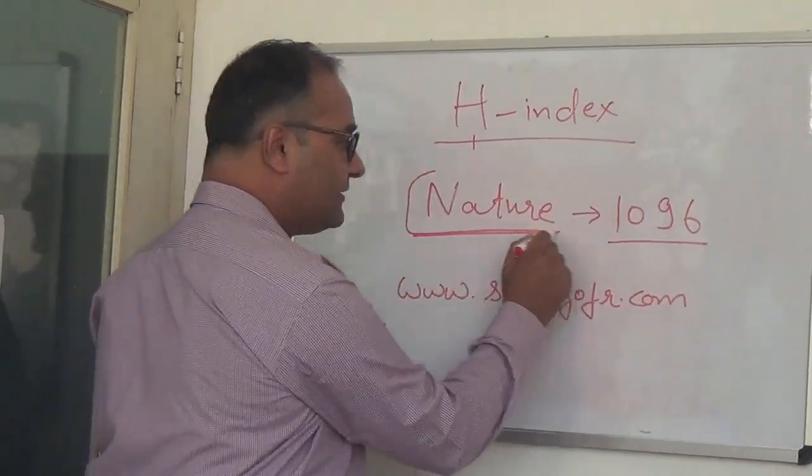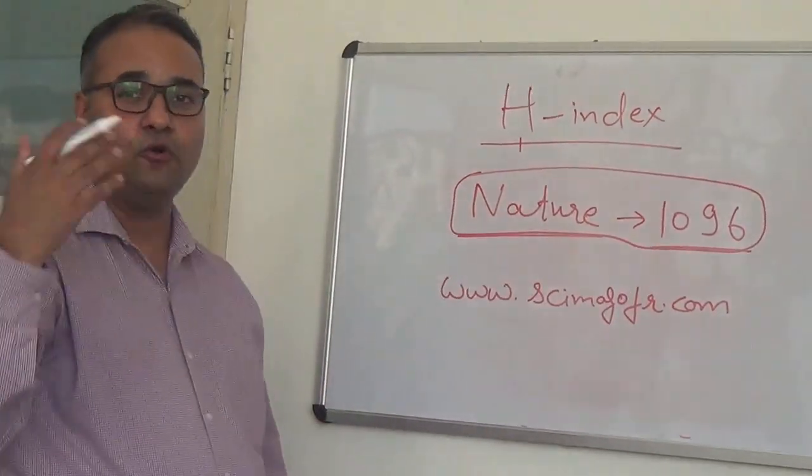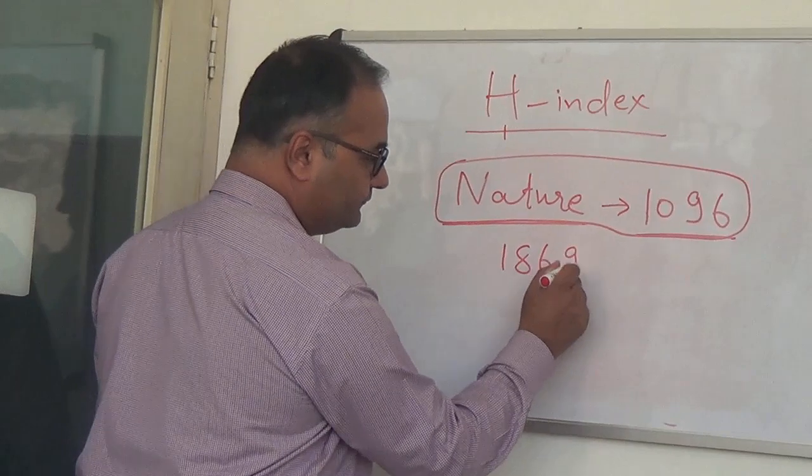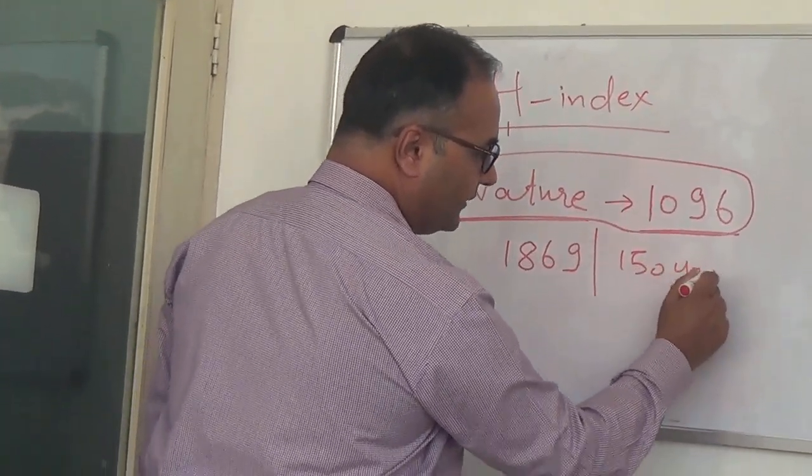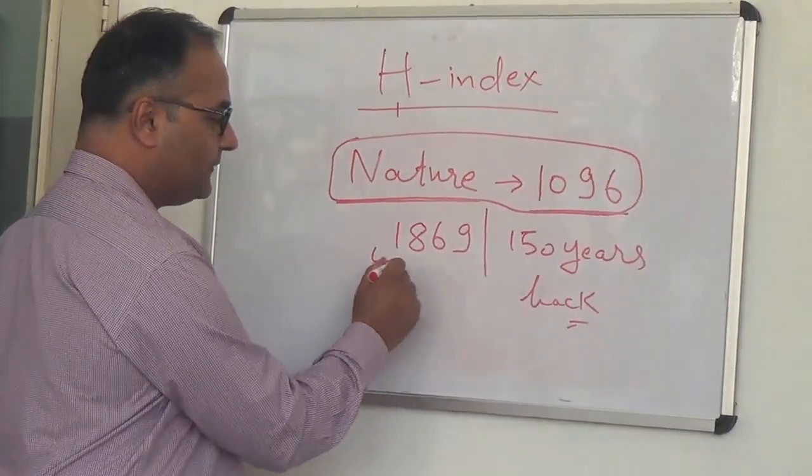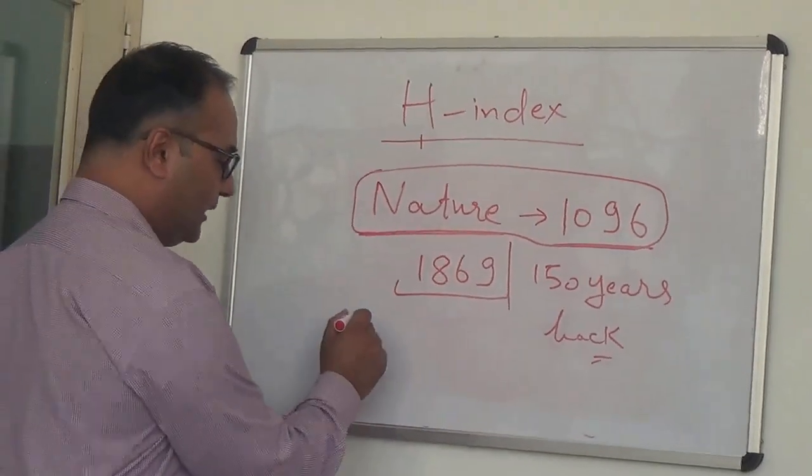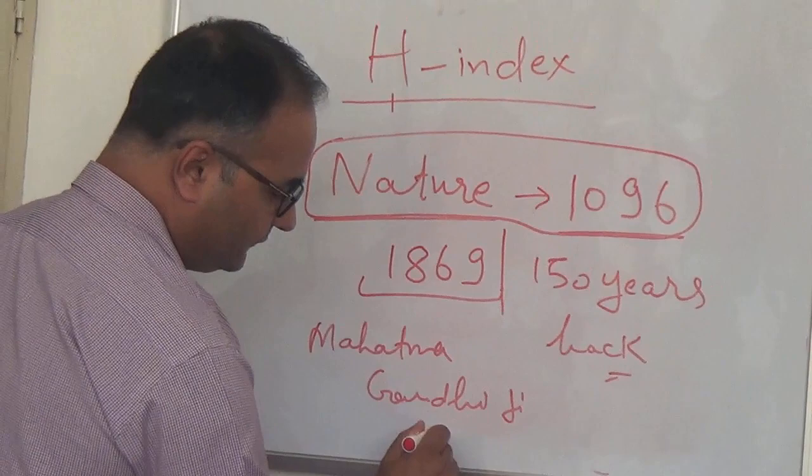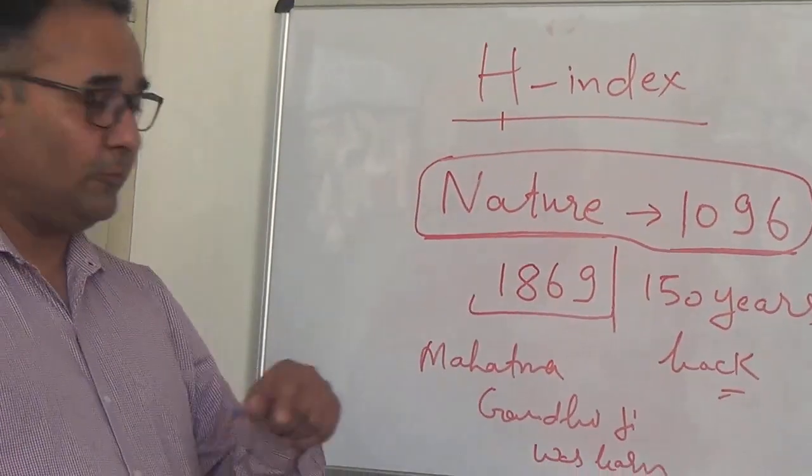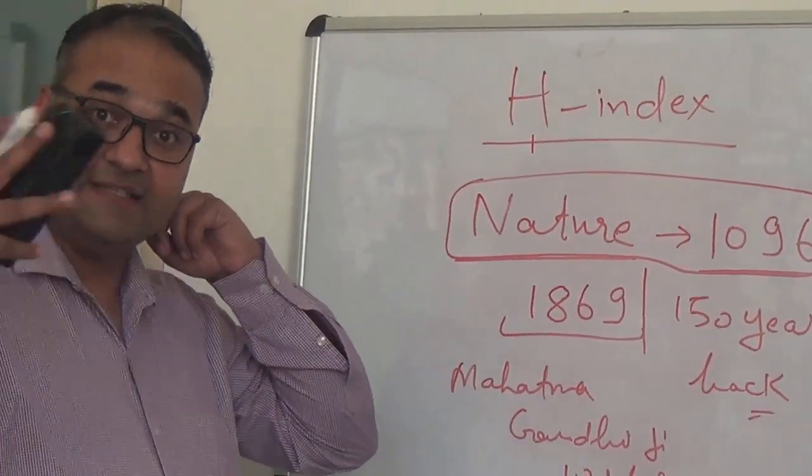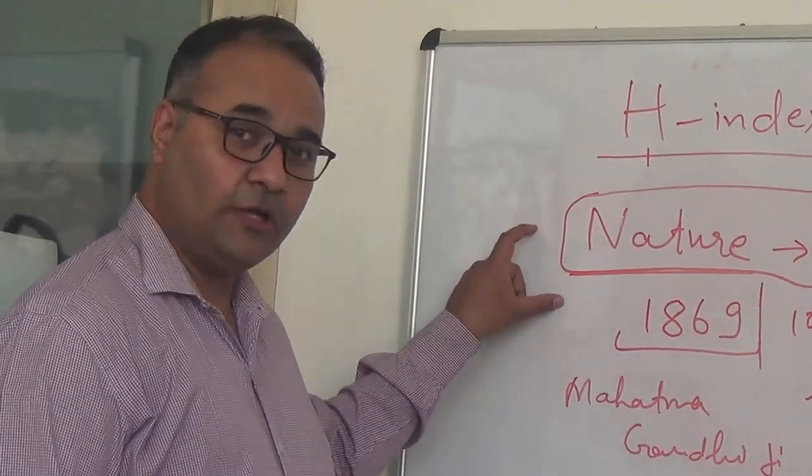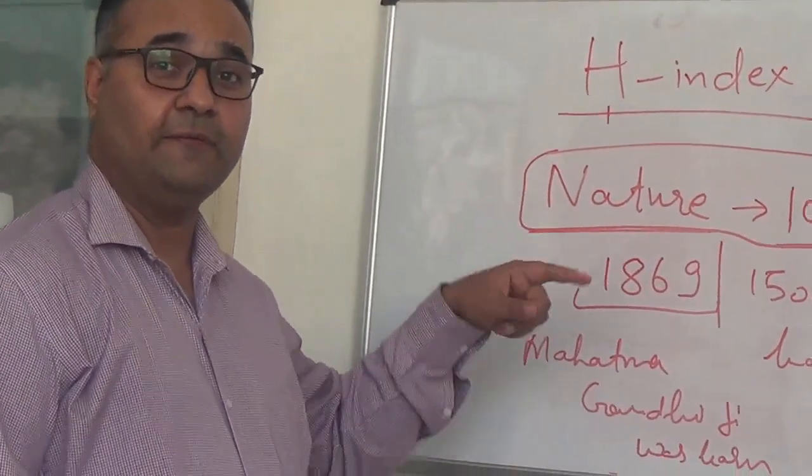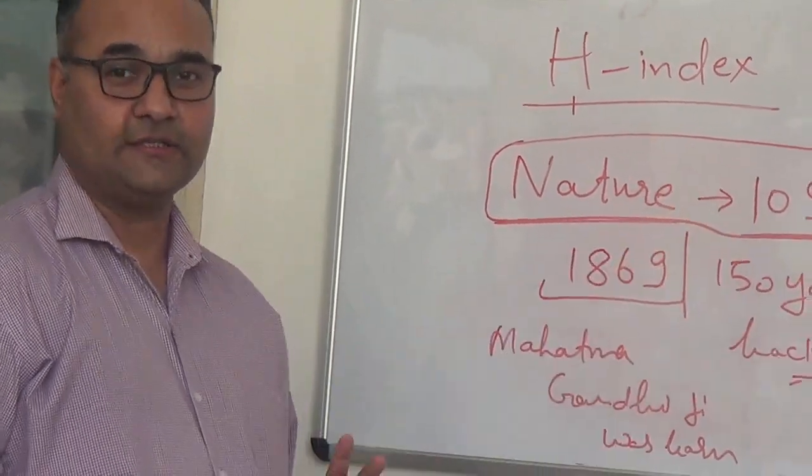So what does it mean? To garner or earn this kind of H-index, this journal has to be a very old journal. You would be delighted to note that this journal was started in 1869, almost 150 years back. This year is very crucial for Indian history because the same year our father of the nation was also born—Mahatma Gandhi was born the same year. If Mahatma Gandhi would have been alive, he would also have been 150 years old. The purpose of making this point is you can make out that H-index increases with the age of the entity. In this case the entity is the journal Nature, and because this journal is 150 years old, H-index has increased to 1096.